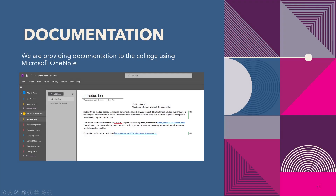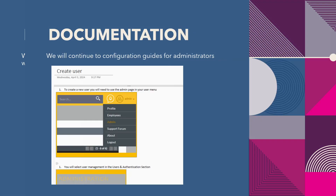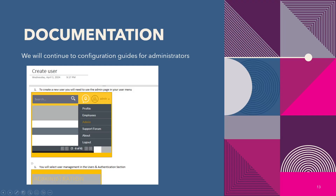We are providing documentation to the college using Microsoft OneNote. We aim to provide comprehensive documentation starting with instructions on how to connect for new users, including how to install the VPN client and how to connect to the system. We will continue to document configuration guides for administrators, such as how to create a user, how to create a permission group, and how to configure the software.